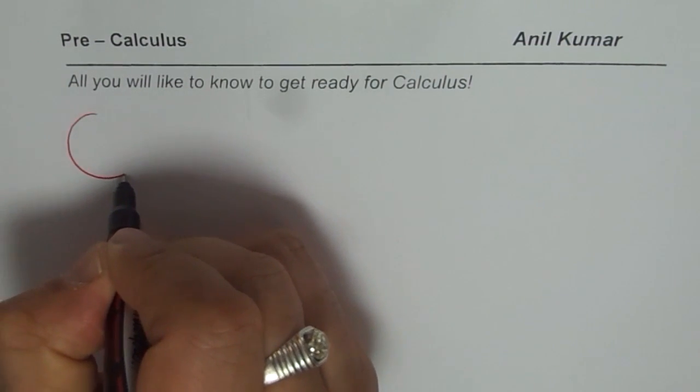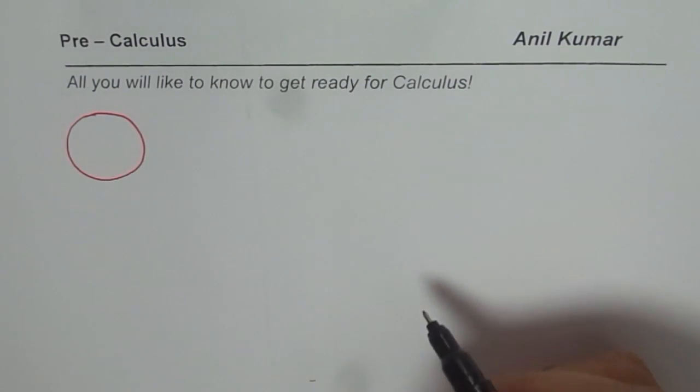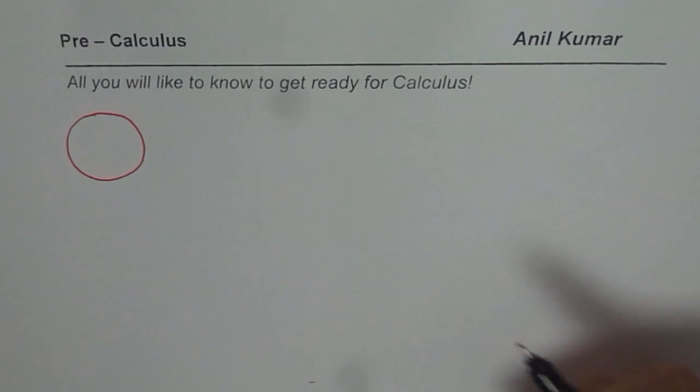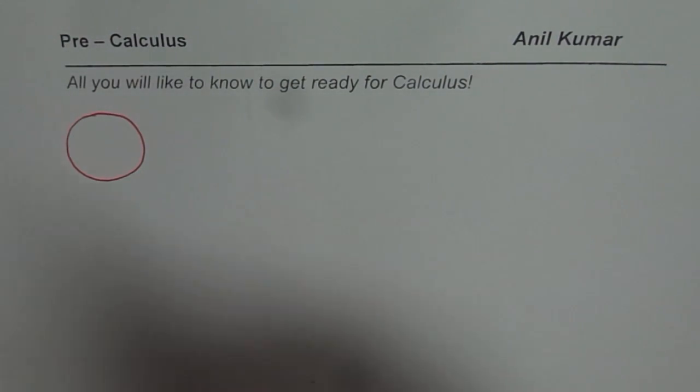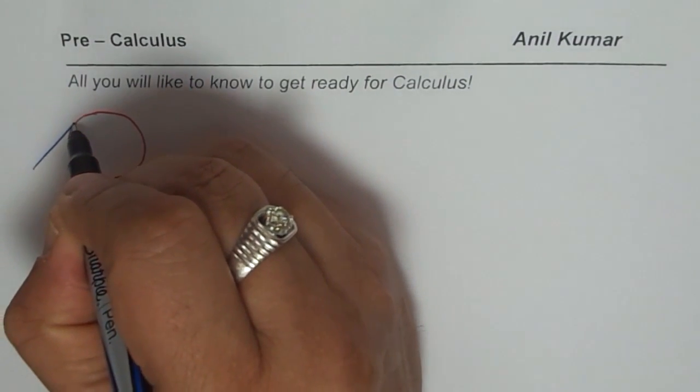Calculus is all about finding tangents or rate of change. In calculus we actually define what a tangent is. Till now you know what a tangent is - you say tangent is a line which touches the curve at one point.